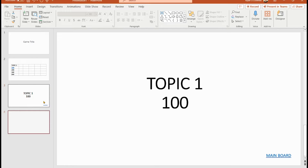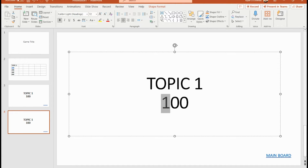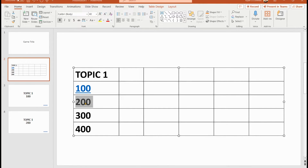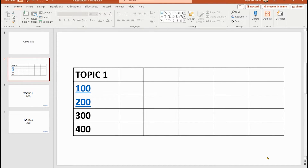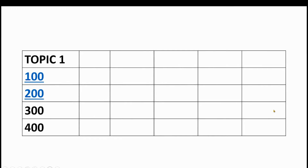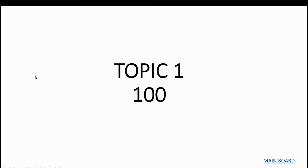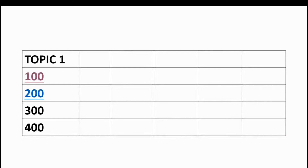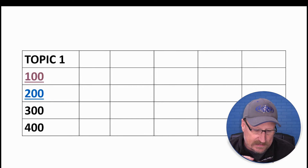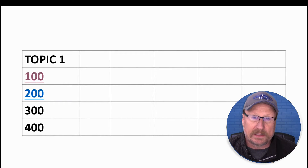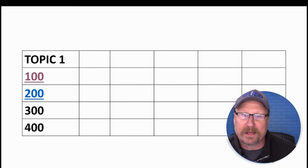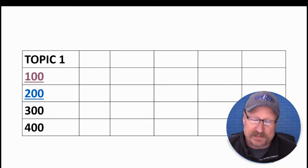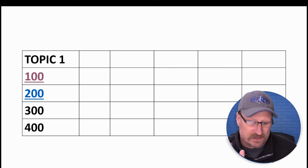I'll link Topic One 100 to that slide, and there's the blue link. I'll duplicate that and make a Topic One 200, changing the link accordingly. Here's how it works on the main board: clicking 100 jumps to that question, clicking 'Main Board' takes you back. Notice the difference — blue means a link not yet visited, and purple means a visited link, just like early internet days.